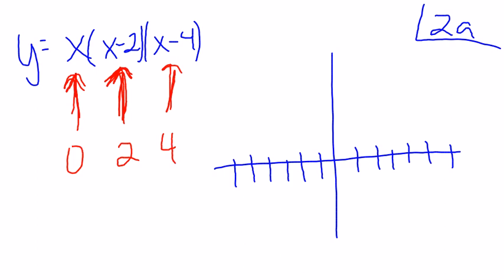Similarly, four will make it zero. So what I'm going to do is go over here and put dots at all my zeros, which are zero.